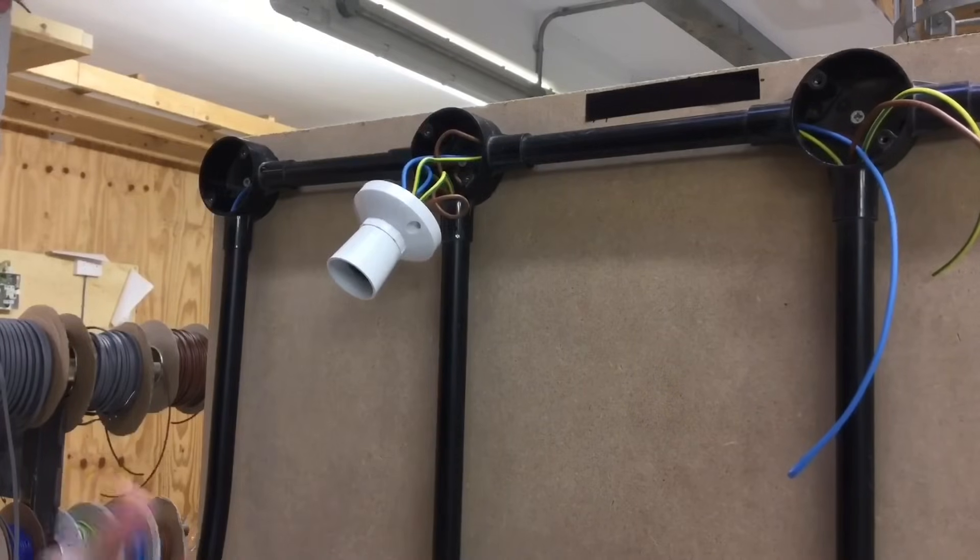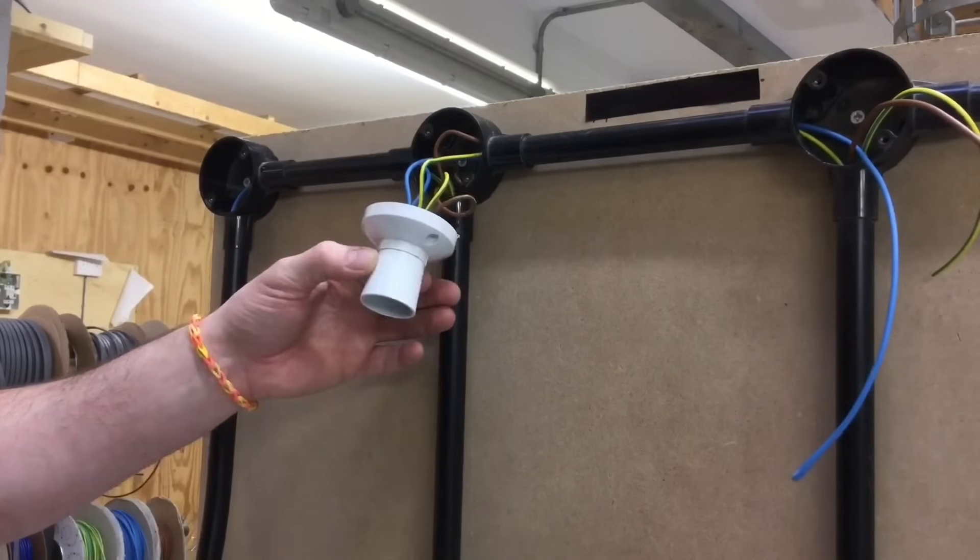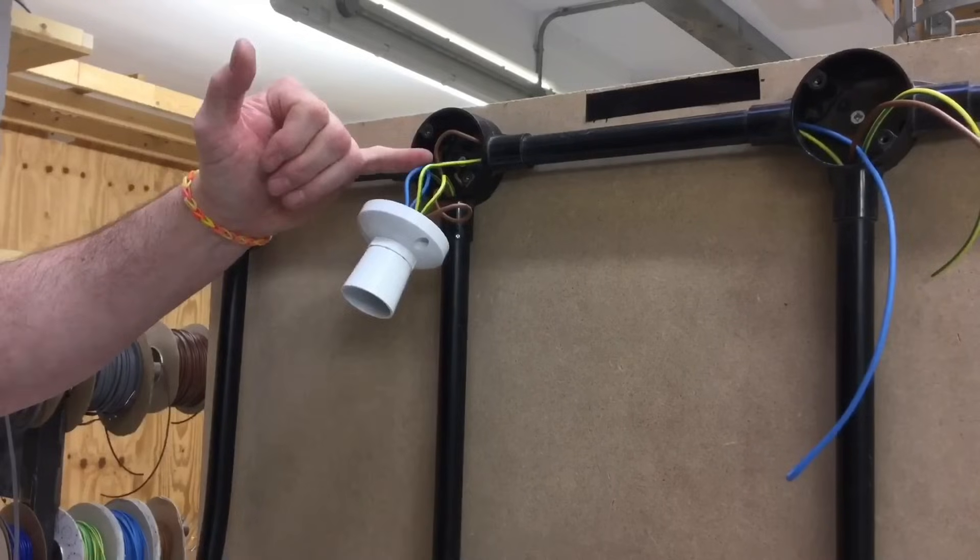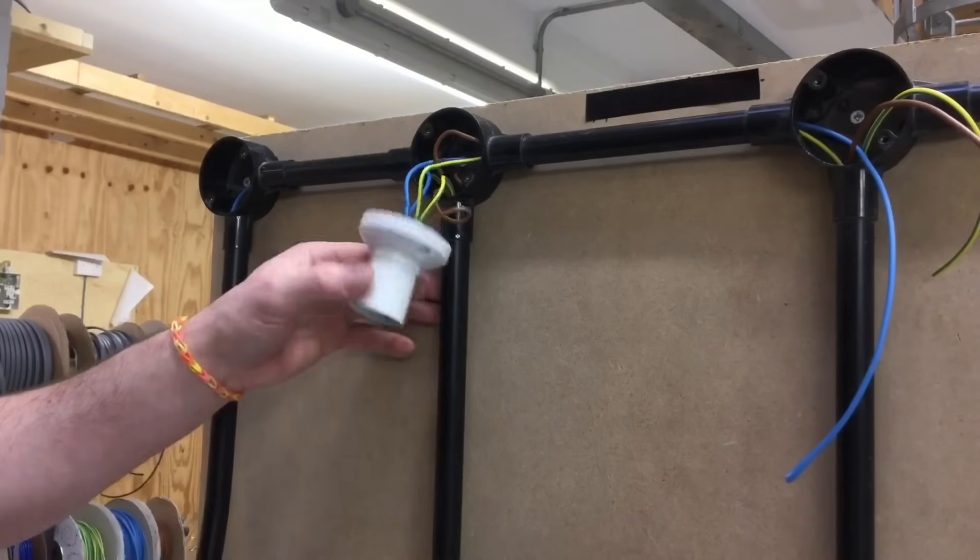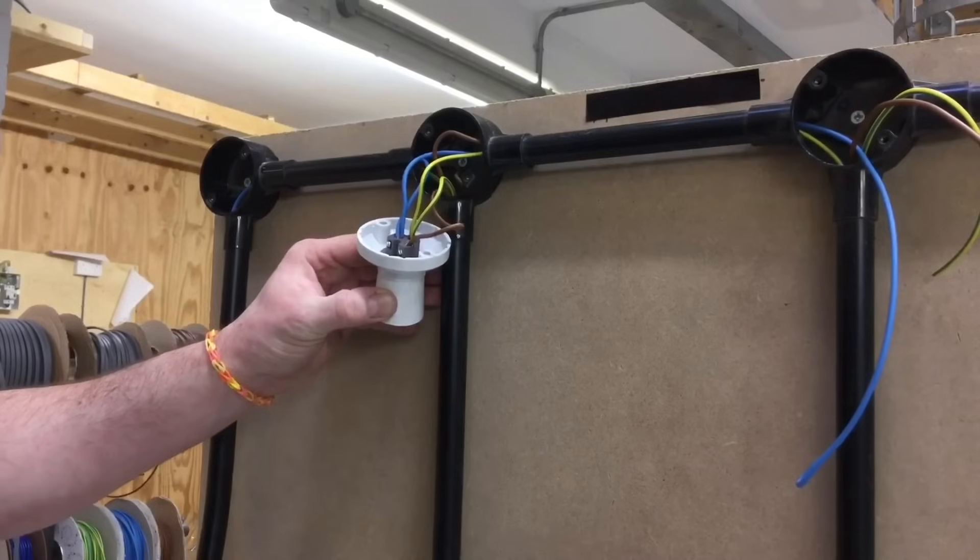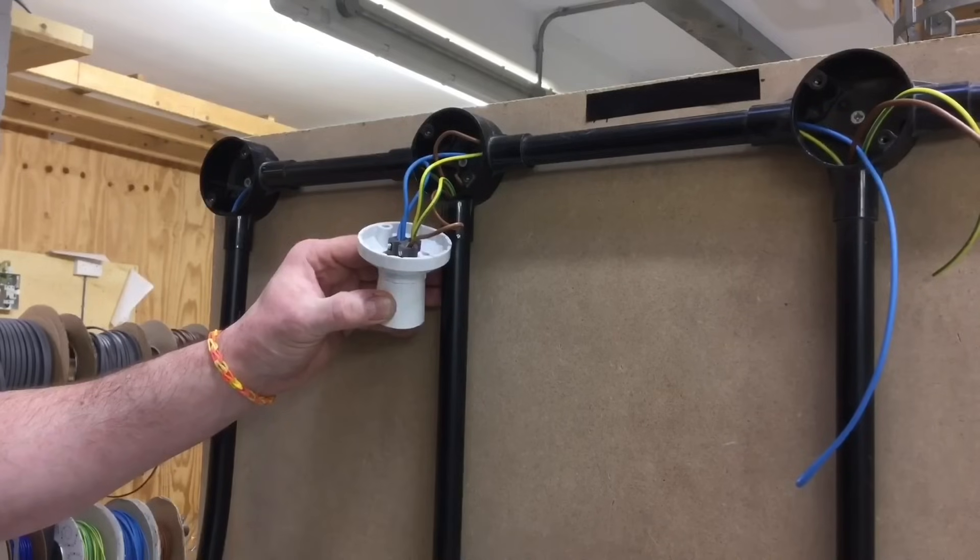So we've terminated both a one-way switch and a straight skirted batten lamp holder, this time in PVC singles. Making sure our conductors are tightly twisted together before termination, and making the decision whether they are singled or doubled over depending on how many are going into each hole. I hope this video has been some help.